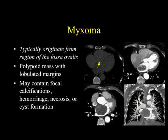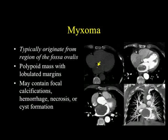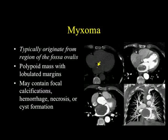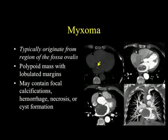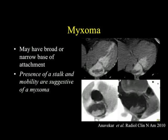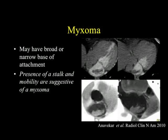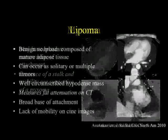You can see it very nicely in this case as a polypoid mass with lobular margins. It may contain focal calcification, hemorrhage, necrosis, or cyst formation — calcification is the most common finding. A question always comes up: can thrombus calcify? Anything could calcify, but it needs to be a really long-standing thrombus. If I see calcification, I'm really thinking myxoma, particularly when it looks like punctate calcifications. A myxoma may have a broad base or a narrow base of attachment. Here was a great case where I thought there was a stalk present — it was irregular and larger than the base itself — and in fact it was confirmed as myxoma at surgery.